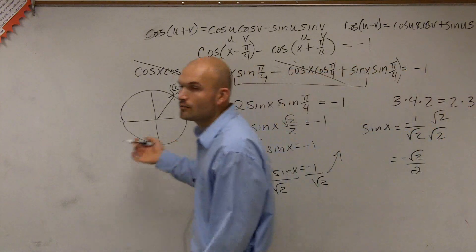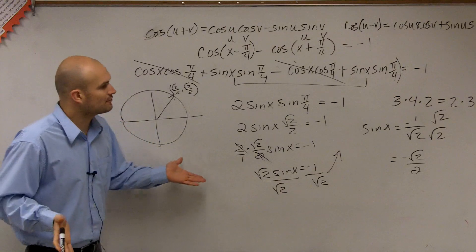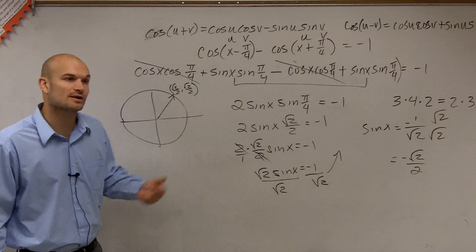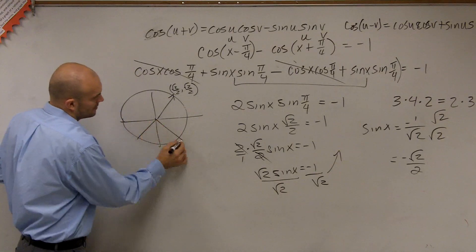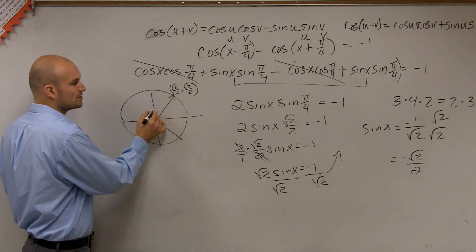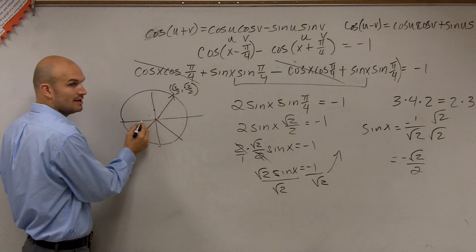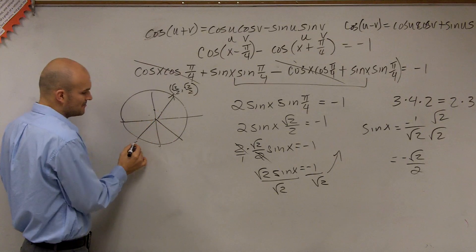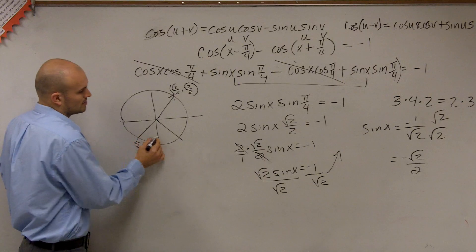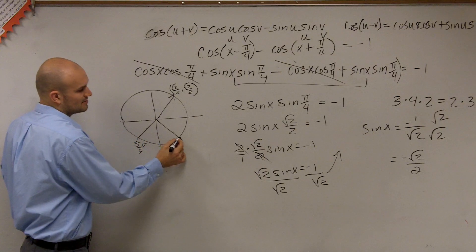So now we go back to our unit circle and we say, what angles, then, do we have where the sine value is equal to a negative square root of 2 over 2? Well, it's going to be not pi over 4, 2 pi, 3 pi, or 4 pi. But now we're going to do this 5 pi. See, not 6 pi, but now 7 pi.